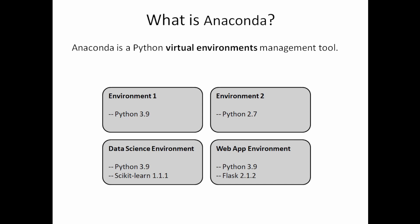For example, the latest Python version as I'm making this video is 3.9. We can create an environment 1 to install the latest and the greatest Python version. On the other hand, if we need to run an application that can only be run on the legacy Python version of 2.7, we can create an environment 2 that is running with 2.7. Depending on how you want to manage it, you can also create separate environments for different applications.